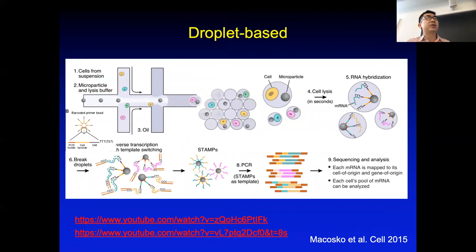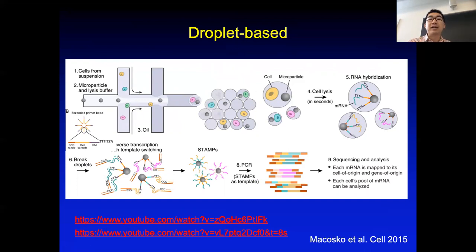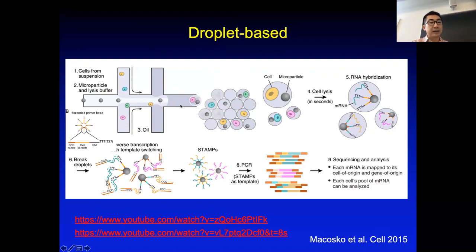So what if we want to do more single cells — say tens of thousands at a time? In 2015, people at Harvard developed an automatic single-cell machine named Drop-seq, which really drove the single-cell field forward. The basic idea is that the machine has multiple channels: in one channel you sort and push cells one by one, in another channel you push beads and lysis buffers, and you use oils to control the speed. In the final channel, a droplet forms in which only one cell is paired with one bead. You then collect all the droplets, lyse the cells, let the RNA hybridize to the beads, break the droplets, perform reverse transcription, and do downstream sequencing.